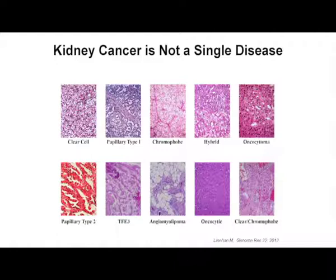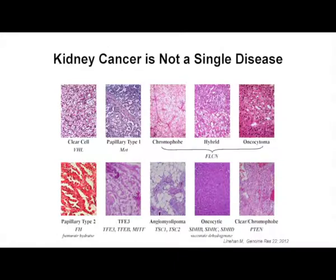Some 10 to 15% of patients have papillary carcinomas, 4 to 5% chromophobe, and there are many other types of kidney cancer with completely different pathologic, biological, and molecular characteristics. Kidney cancer is not a single disease. We know that papillary type 1 may be driven by MET, papillary type 2 by alterations in the fumarate hydratase gene, and oncocytic with alterations in the succinate dehydrogenase gene, and FLCN abnormalities may be important in chromophobe and oncocytoma.